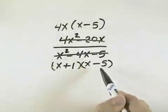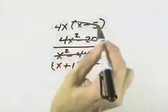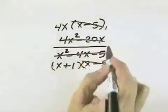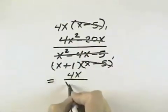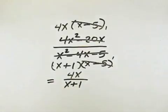Which now means we do have a common factor in the numerator and the denominator. That common factor is x minus 5, so we can cancel those out, leaving the 4x in the numerator and x plus 1 in the denominator as the simplified form.